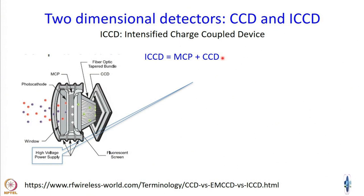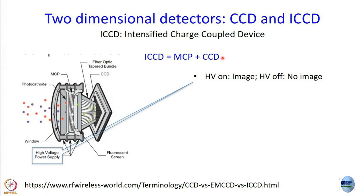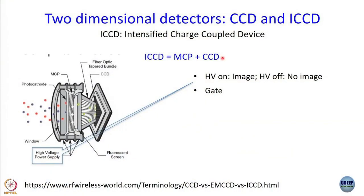Let us not forget that this intensifier can work only when you apply a high voltage, and that is what allows this device to be used for time-resolved measurement. When the high voltage is on, that is when you get a signal; when it is off, you get no signal. If there is no high voltage, maybe that one primary electron reaches the CCD, maybe it does not. But when the high voltage is on, that one electron is replaced by 40,000. So when high voltage is on, the signal is obtained on the CCD; when it is off, no signal is obtained. Now you can use this high voltage as a gate.